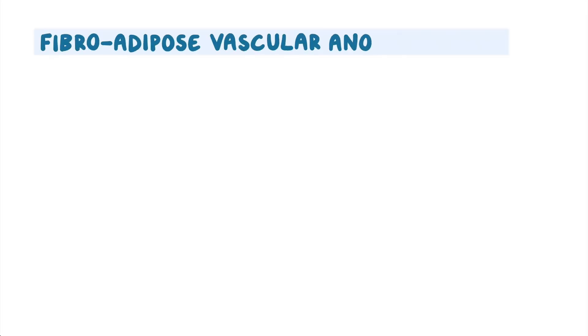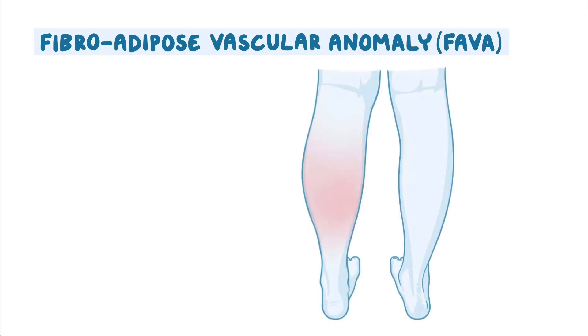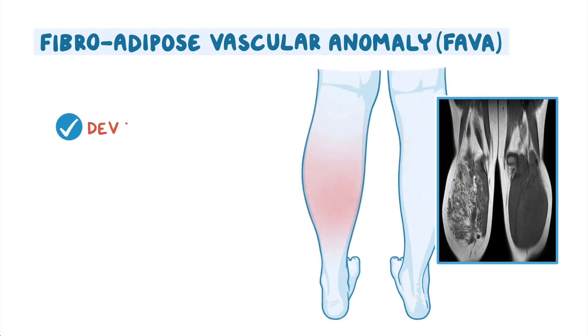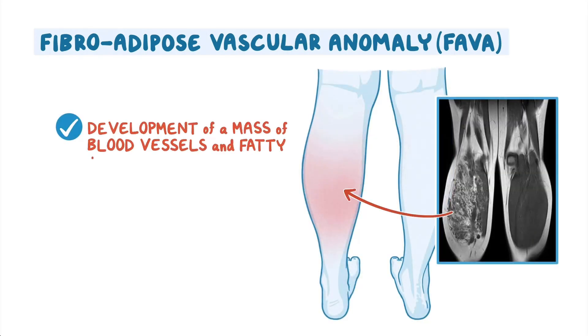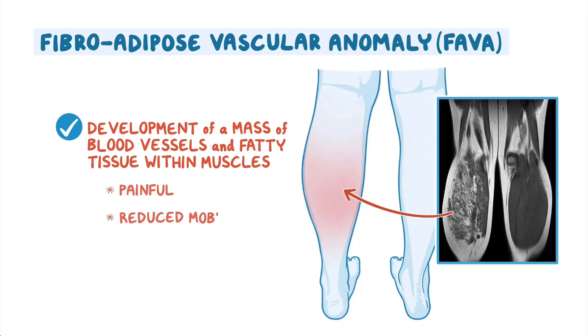Fibroadipose vascular anomaly, or FAVA, is characterized by the development of a mass of blood vessels and fatty tissue within muscles, which can be painful and reduce mobility.